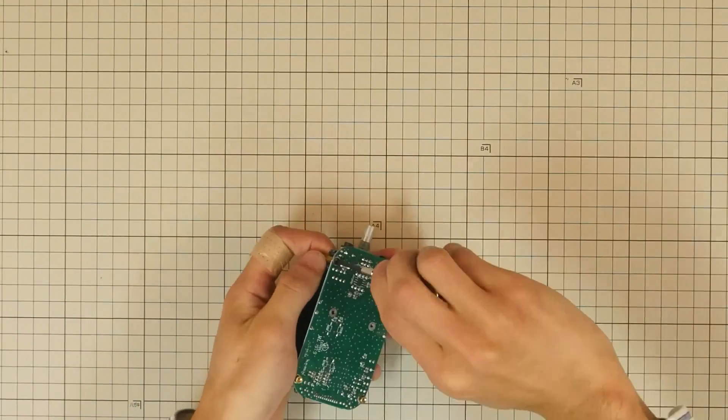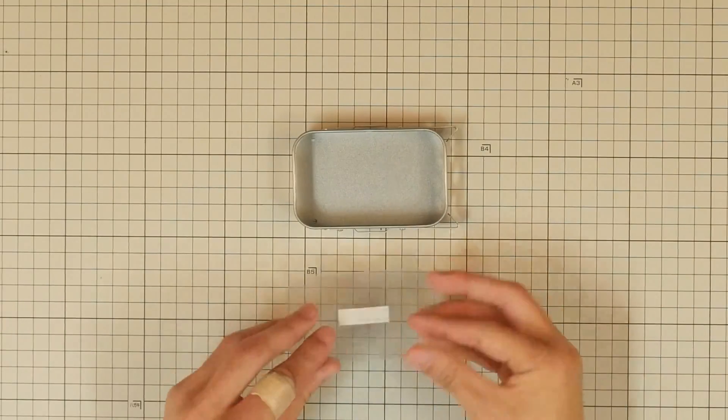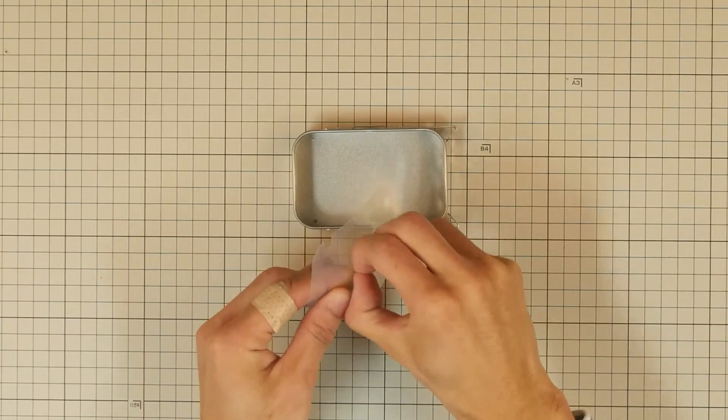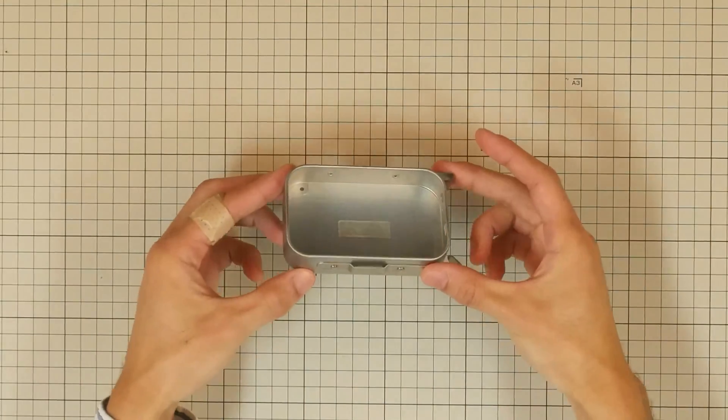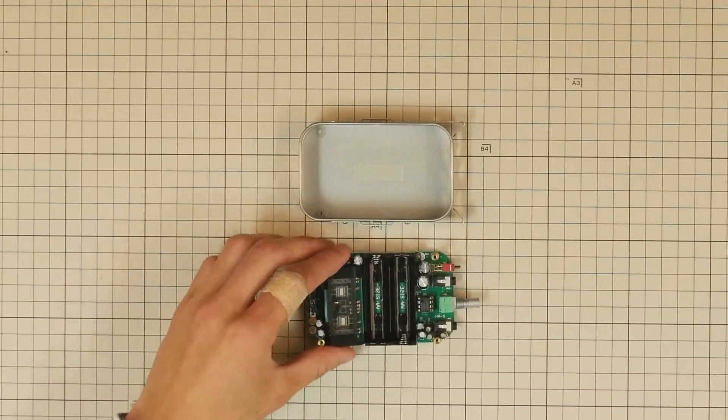Snug with a screwdriver. Next, we're going to install the circuit board into the case. Peel off the release paper from the double-sided tape attached to the insulation sheet and attach it carefully to the inside of the case. Be careful not to cover the screw holes.